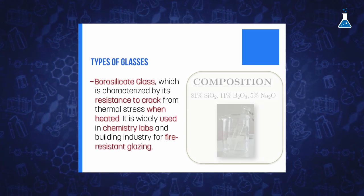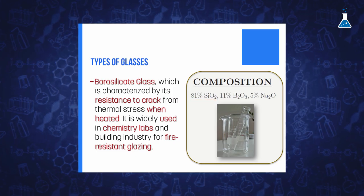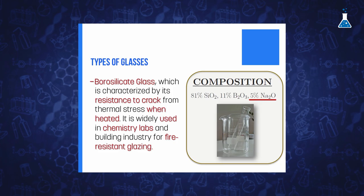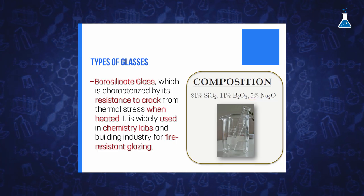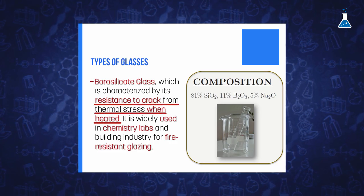In addition, borosilicate glass, with a proportion of 81% silicon dioxide, 11% boron oxide, and 5% sodium oxide, offers, as its main feature, resistance to cracking from thermal stress when heated. These materials are widely employed in chemistry laboratories or in the building industry for fire-resistant glazing.